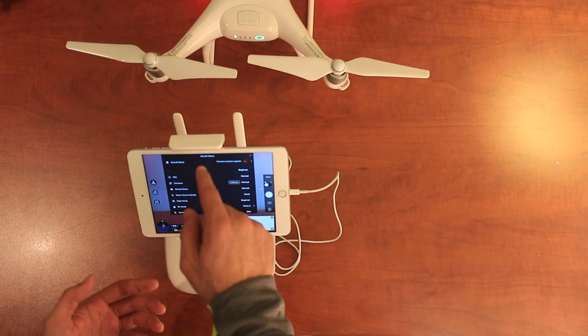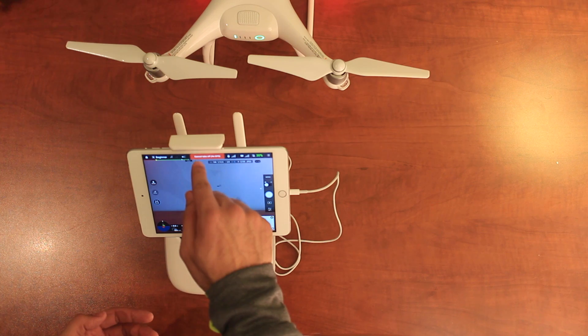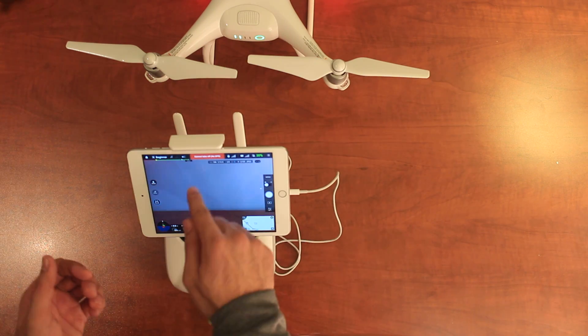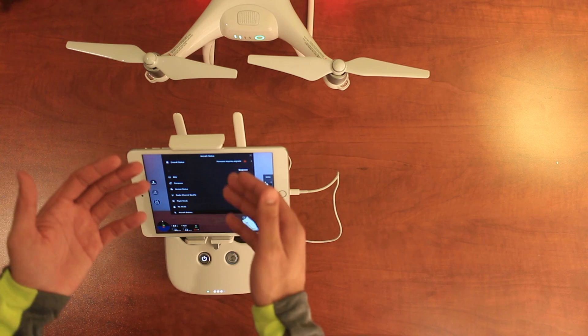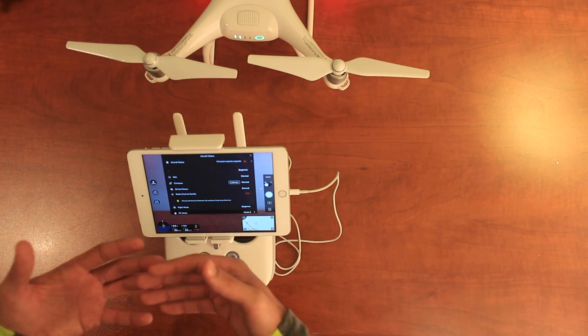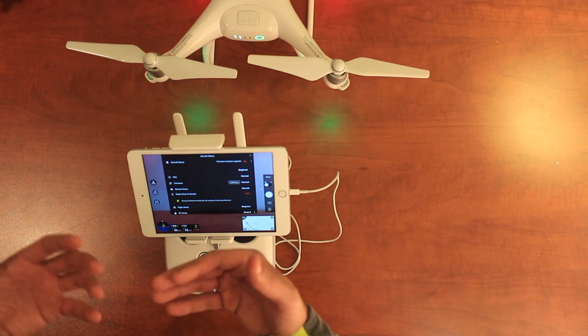If I click on the top here where it says cannot take off because there's no GPS—that makes sense because we're indoors—and click on that, it tells me that the compass calibration is normal. So that's your way to find out if the calibration successfully happened.